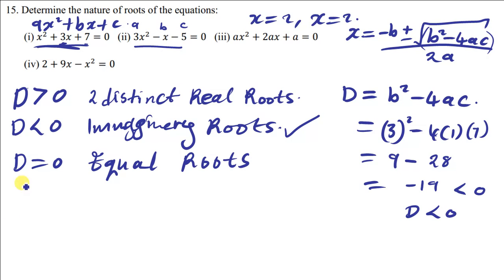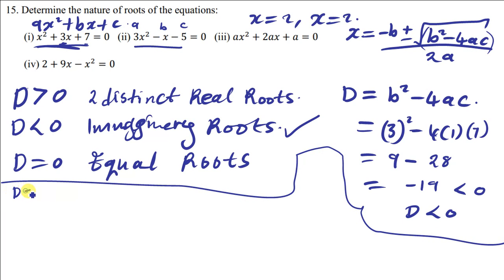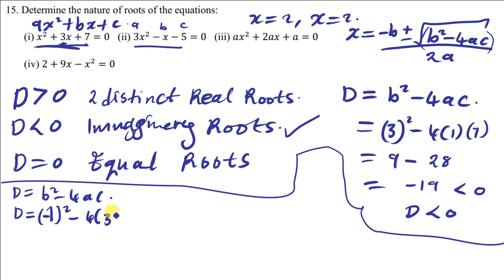D equals b squared minus 4ac. The value of b is negative 1, so we square negative 1. Then we subtract 4 times a, which is 3, times c, which is negative 5. Negative 1 squared gives 1, and negative 4 times negative 5 times 3 gives positive 60.